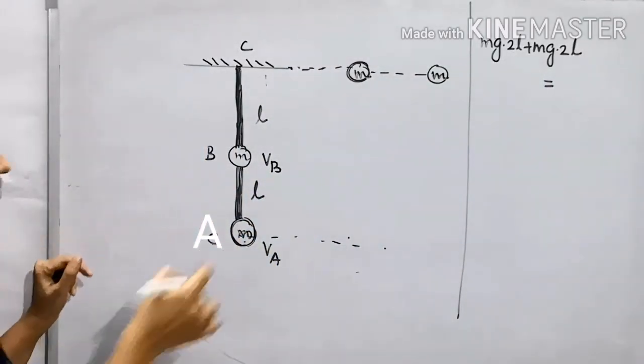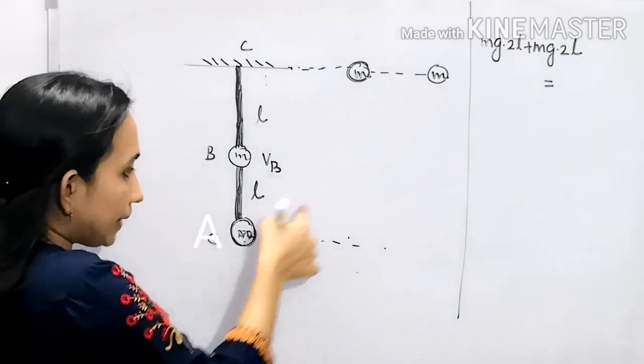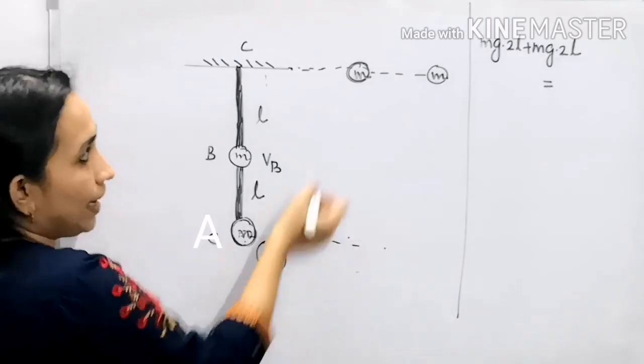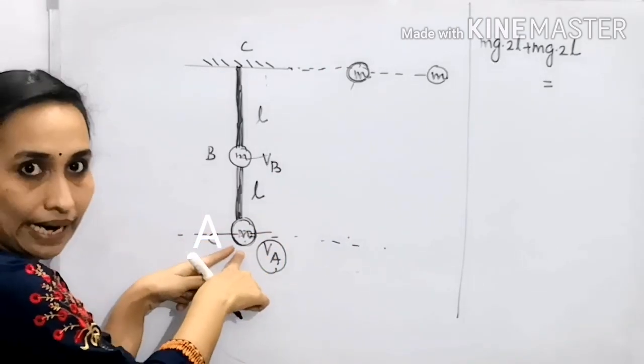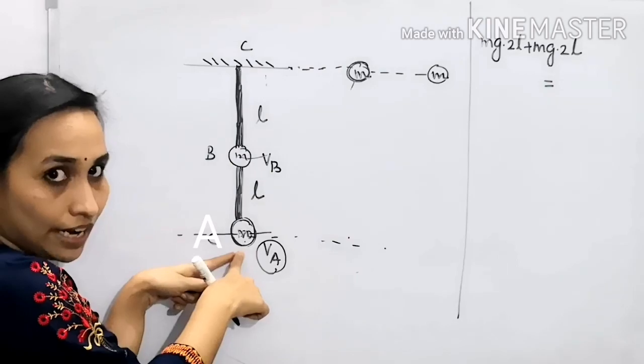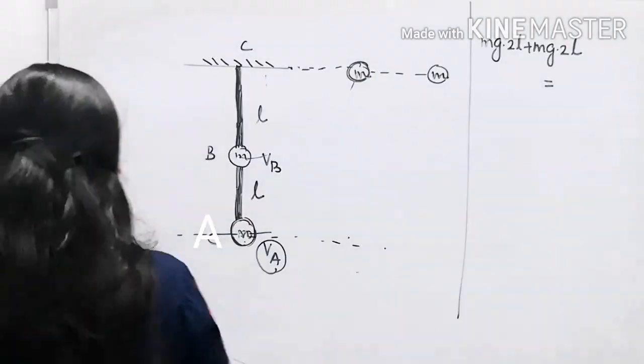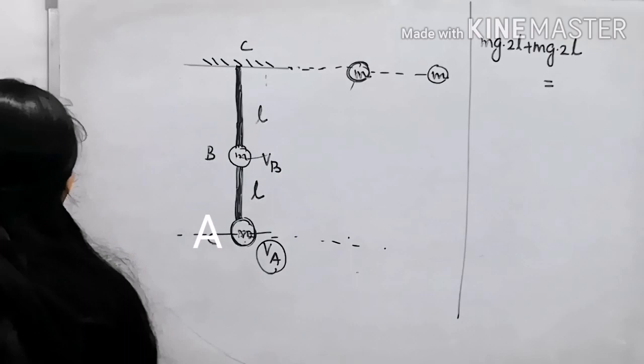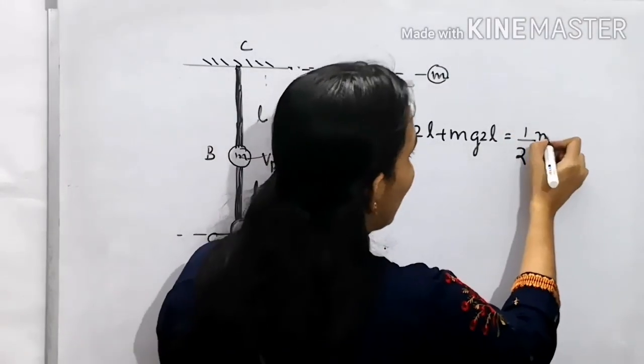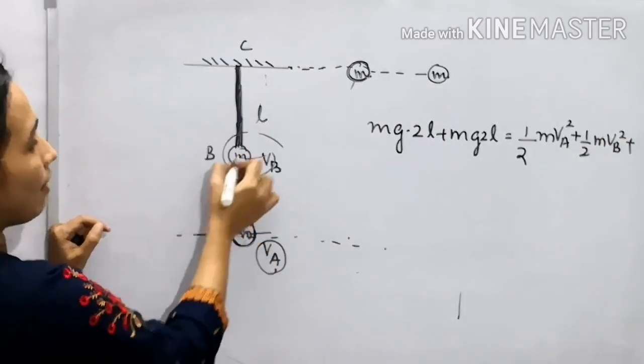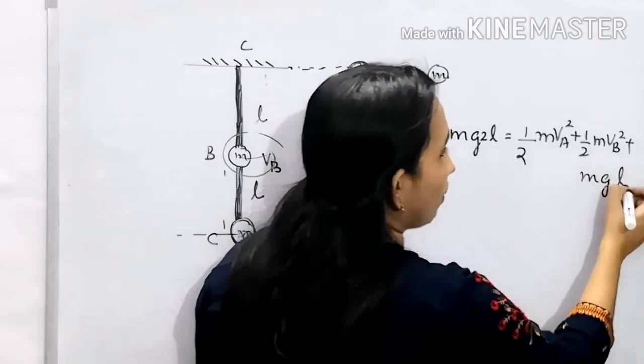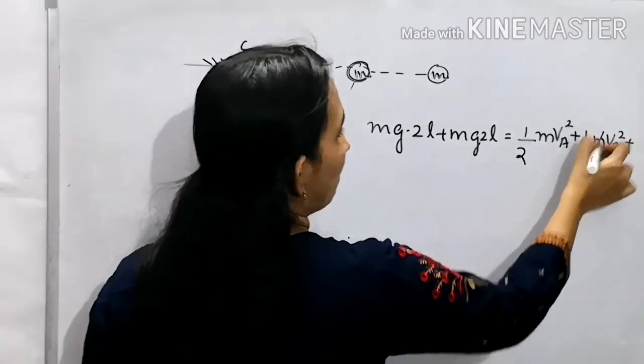Now when it reaches here, when this reaches here, its potential energy becomes zero, but it gains kinetic energy. When this reaches here, its potential energy is not equal to zero because you have taken this as the reference line with potential energy zero. So if I substitute that, Mg into 2L plus Mg into L is the initial potential energy.